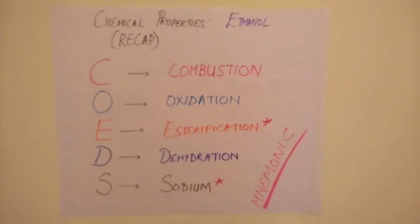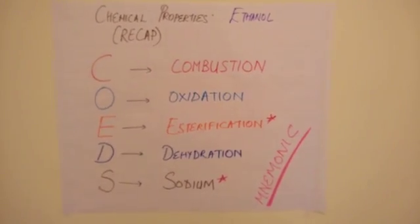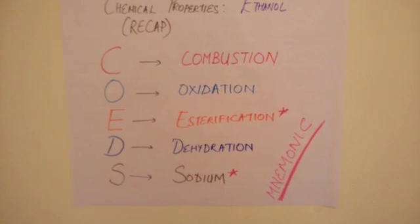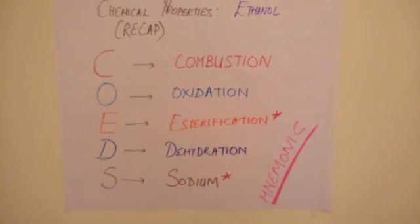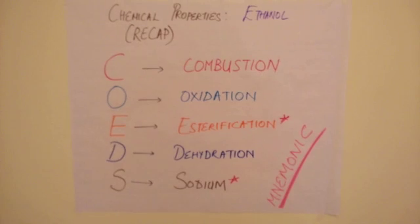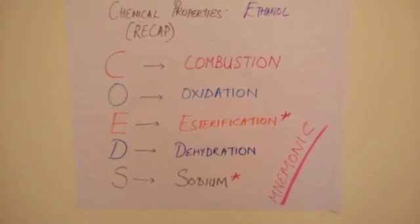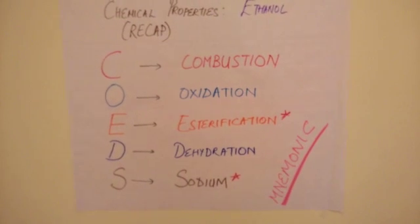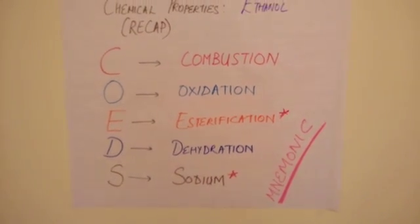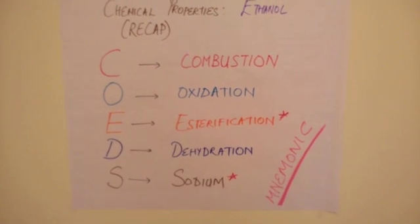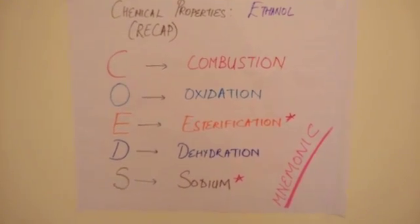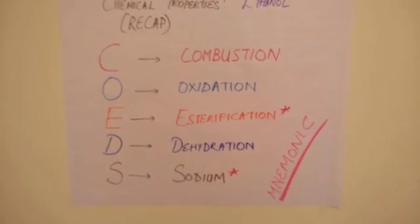And with that, you have the five reactions. To recap, the mnemonic is CODES: C for Combustion, O for Oxidation, E for Esterification, D for Dehydration, and S for Sodium. The two starred reactions are the tests for ethanol. Hopefully you'll remember this and the exam will prove to be relatively easy.